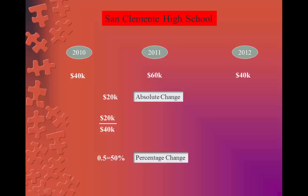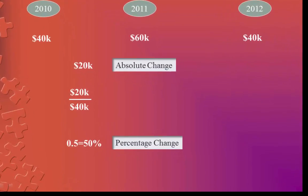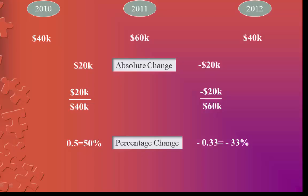One would expect to see these facts when calculating percentage change with the traditional formula. The increase from 2010 to 2011 amounts to 50% — we get this by calculating the absolute change of $20,000 and dividing it by the old value of $40,000. For the decrease between 2011 and 2012, the absolute change is negative $20,000. Dividing by the old value of $60,000 gives a percentage change of negative 33%.